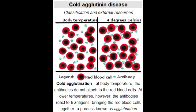What causes cold agglutinin disease? Cold agglutinin disease is caused by mycoplasma pneumoniae and infectious mononucleosis.